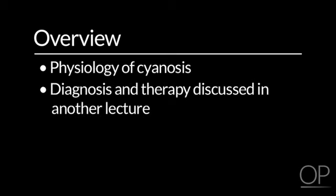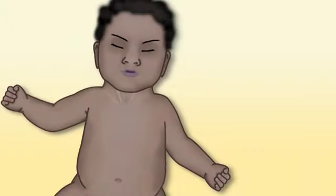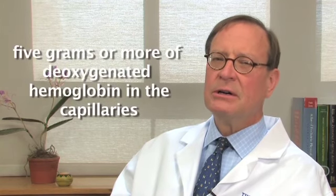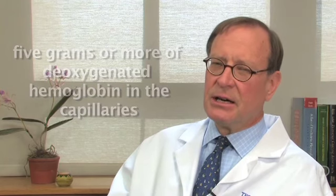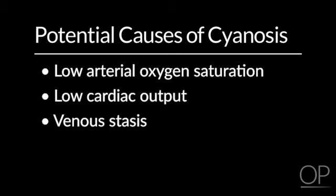Diagnosis and therapy are primarily discussed in a separate lecture. Cyanosis is really the bluish color of the skin and mucous membranes due to approximately five grams or more of deoxygenated hemoglobin in the capillaries. Cyanosis can be due to low arterial oxygen saturation — that's the dangerous form of cyanosis — but low cardiac output and venous stasis can also result in cyanosis. What we're really going to be talking about primarily is arterial hypoxemia.